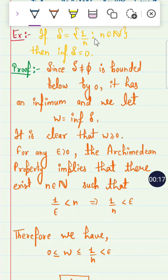S is equal to 1 over N where N is in natural numbers. Then the limit of this is 0. But what is the limit? Is it infimum or supremum that we have to find out? Now, infimum of S is equal to 0. Now, what is the proof?